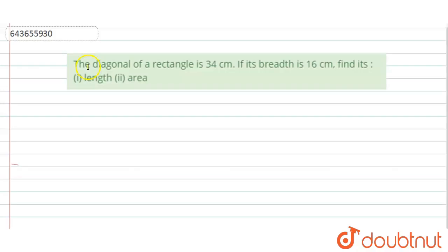Hi, welcome to this video. The question is: the diagonal of a rectangle is 34 cm. If its breadth is 16 cm, find its first part length, second part area.